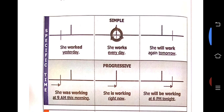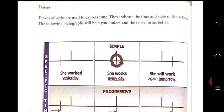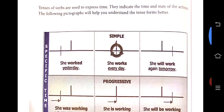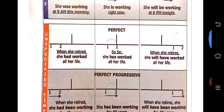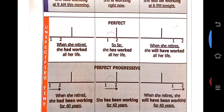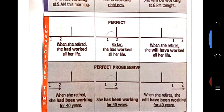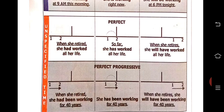In the textbook they have given the definition: tenses of verbs are used to express time. They indicate the time and state of the action. The following pictographs will help you understand the tense forms better. They have divided into 2 parts — one is specific time and then unspecified time. Simple and progressive are considered specific time. Progressive is nothing but continuous tense. Perfect, which is completed action, is unspecified time.